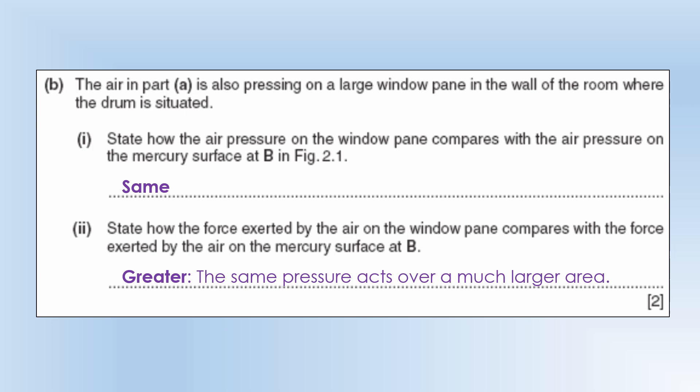so if you have the same pressure but a much larger area that gives you a much bigger force. So windows are actually experiencing very large force but they're experiencing the same force from both sides of the window which just cancel out and you end up with no resultant force at all.